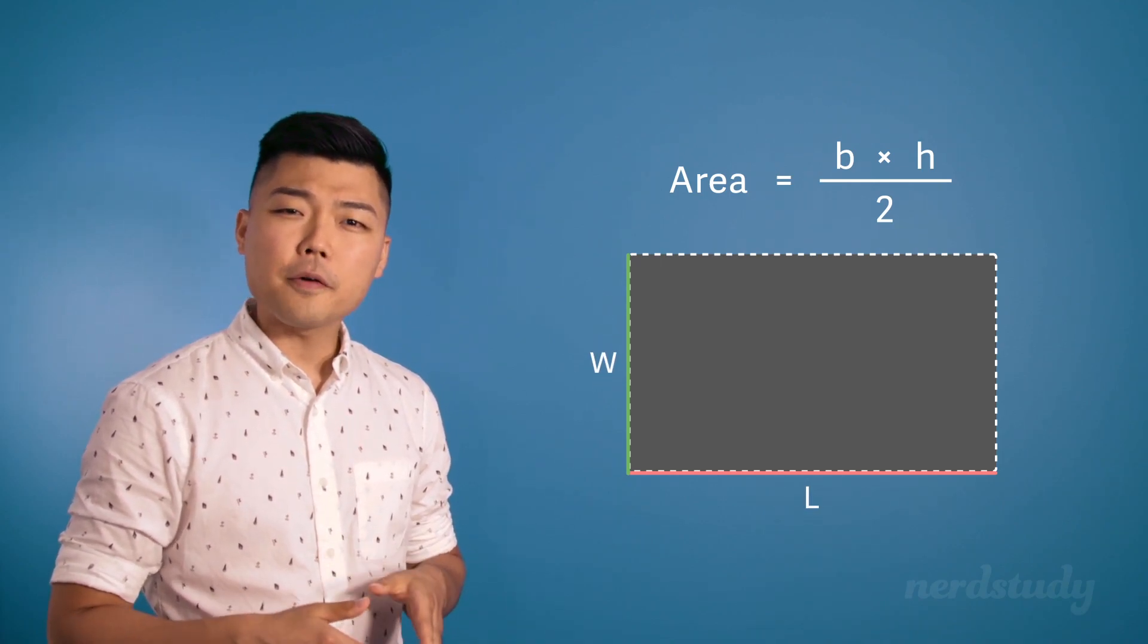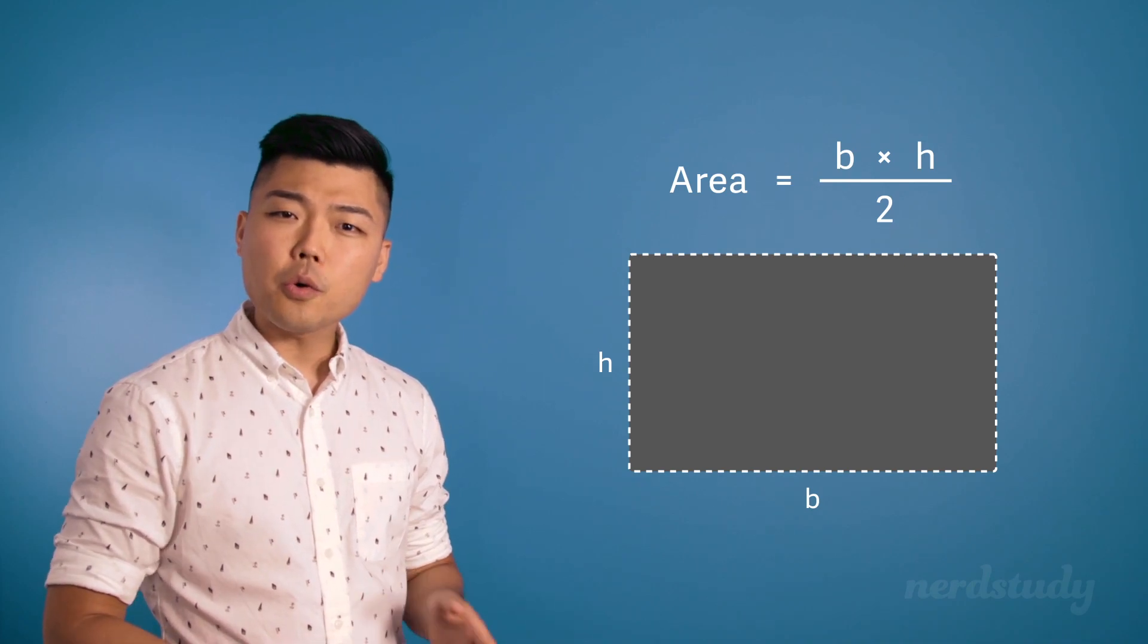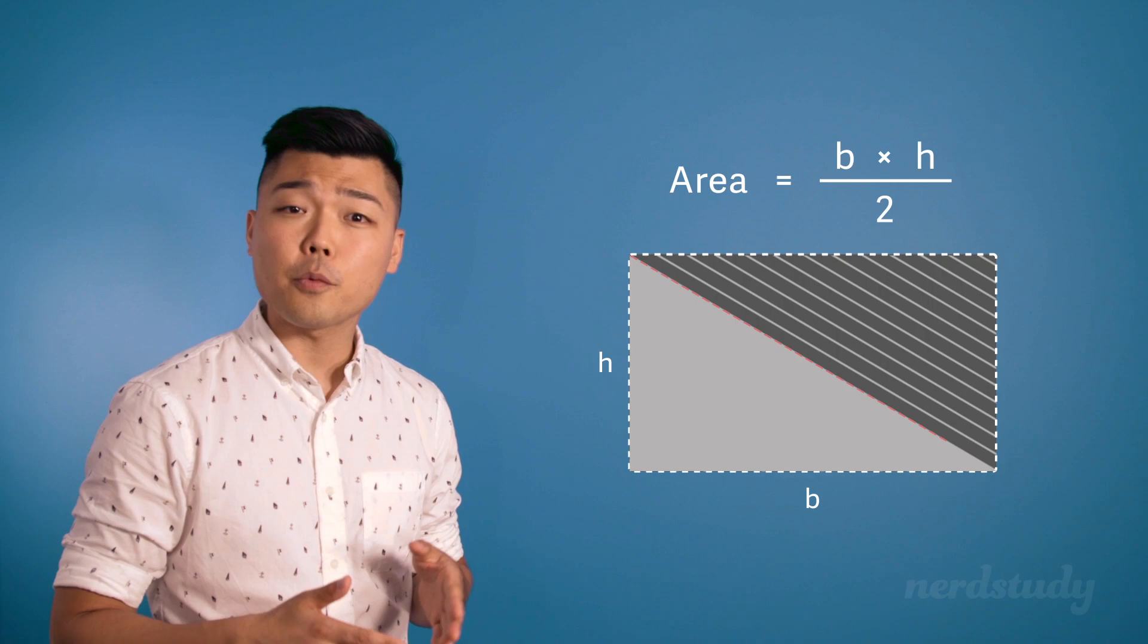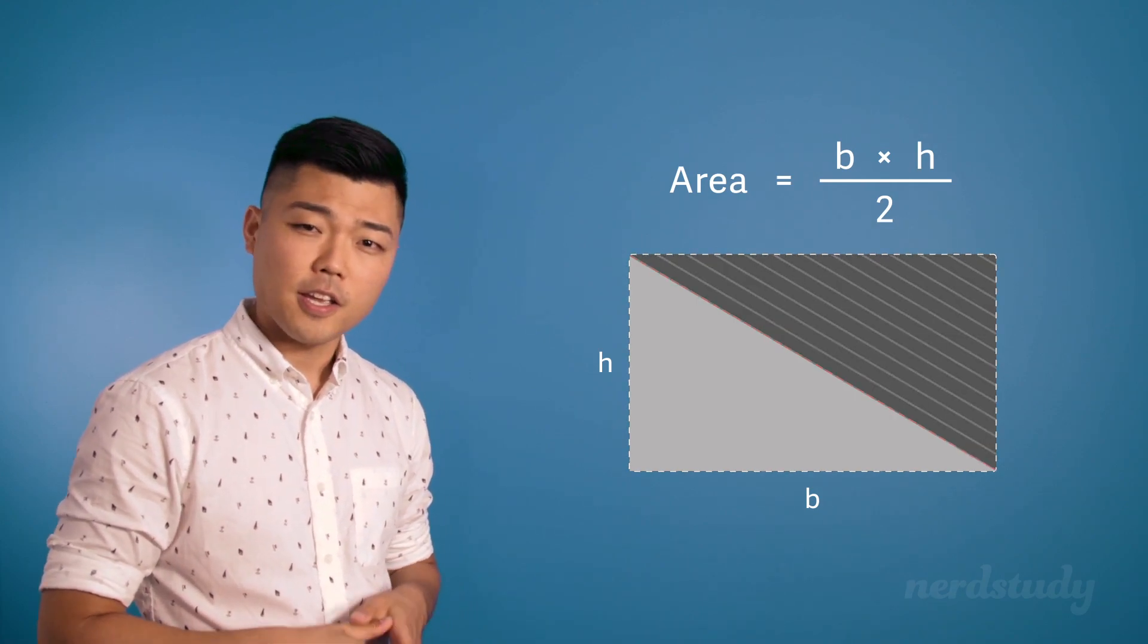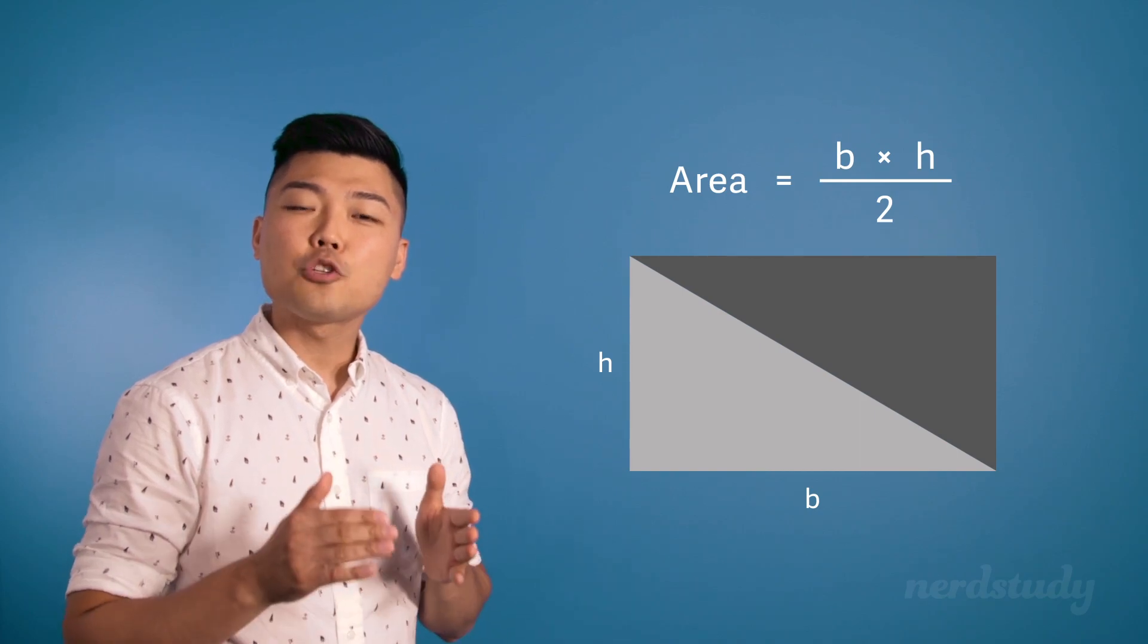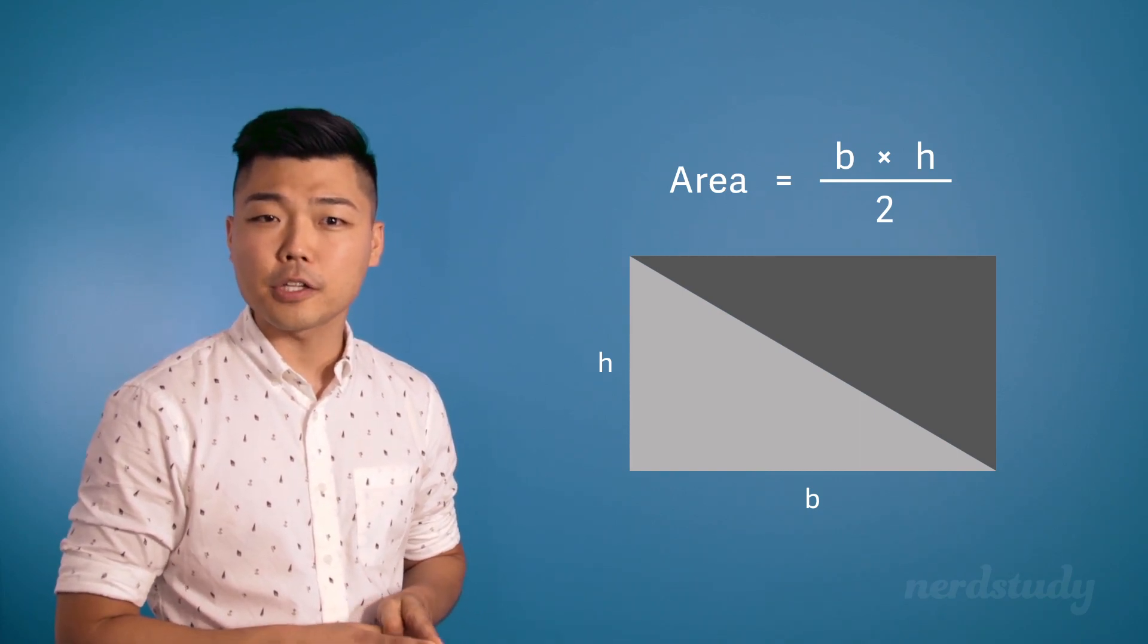But if you got the area of a rectangle, you would notice that this area is more than the area of the triangle that we are trying to find. In fact, the area of the rectangle has an added triangle's amount of area included in it.